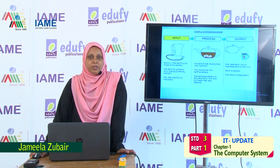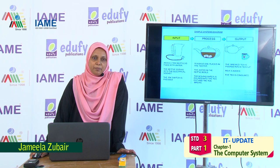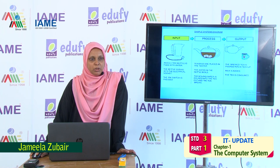So in that also it is working as input, process, output. What is the input here? Water, sugar, and tea powder — this is the input. What is the processing here? The water boiling — that is called the processing. And what will be the output? Tea is the output. Hope you understood what is input, process, and output.